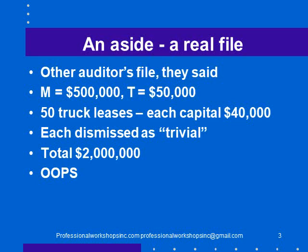This was a real audit file — another auditor's file that we had taken over and got to review. In their file, they said that materiality was $500,000, which was about right. And they documented that trivial — they didn't call it clearly trivial, just trivial — was $50,000, one tenth of materiality.